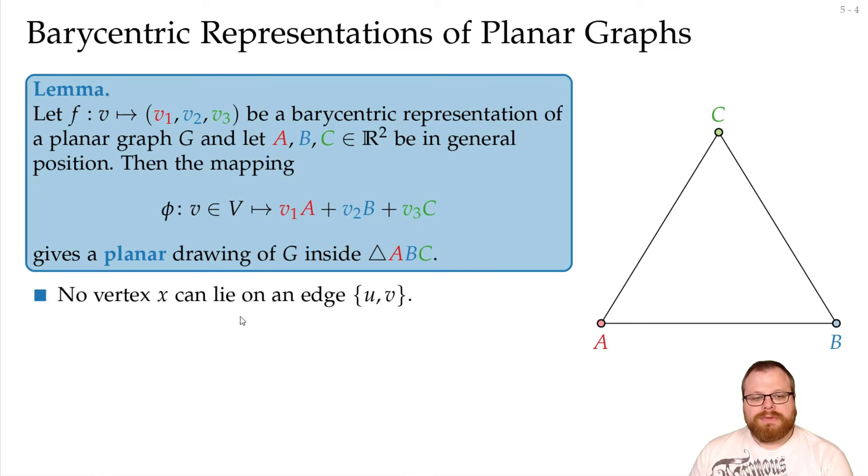First, the vertex edge overlap. Let's say we have a vertex x that lies on edge uv. Then, it has to lie inside this triangle, because clearly the edge is inside this triangle. And that's a contradiction to our property.